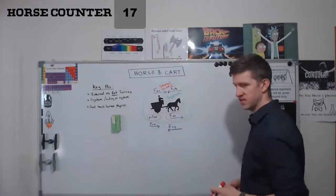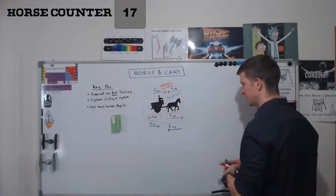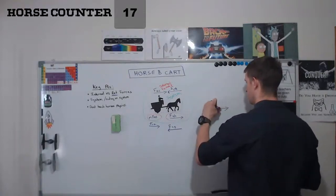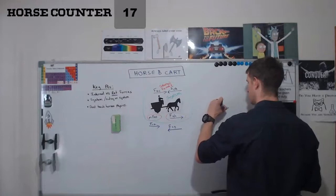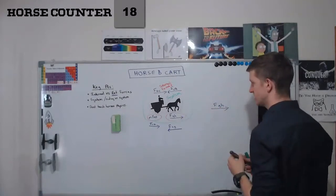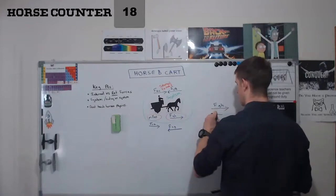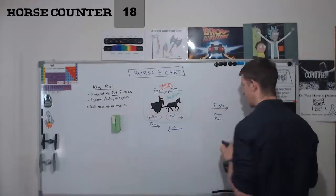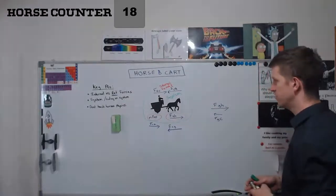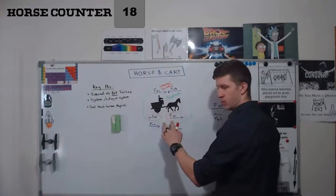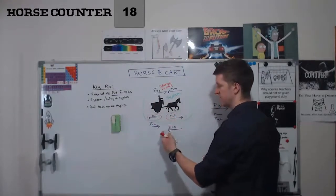These would be my two external objects. So if I was to draw these, I would have the force of the ground on the horse and in the opposite direction, I would have the force of the ground on the cart. These are the two that are acting on the system in some way and they're an external force because they're coming from outside.